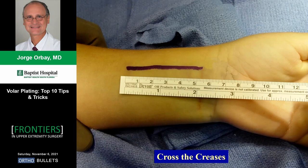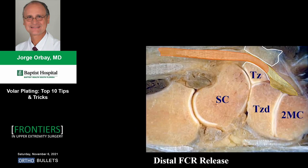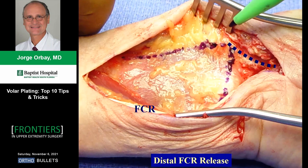To do this properly, a standard Henry approach is not sufficient. We must go more distal, cross the creases with a dart incision to prevent hypertrophic scarring, and extend as far as the trapezial tunnel. Take the FCR out of its tunnel and move it ulnarly. By opening the trapezial tunnel, you are actually partially releasing the transverse carpal ligament, allowing you to move the flexor tendons and median nerve all the way ulnarly without undue tension.